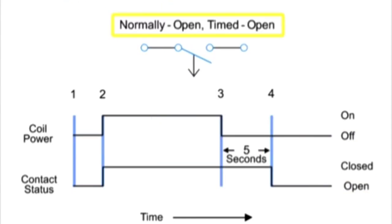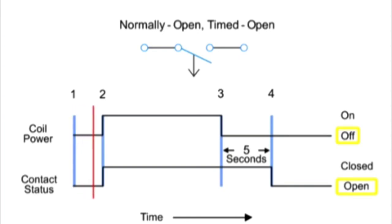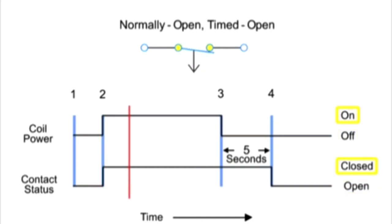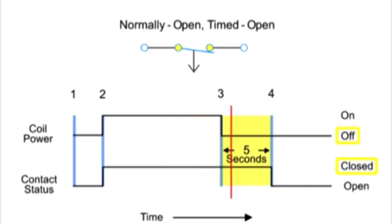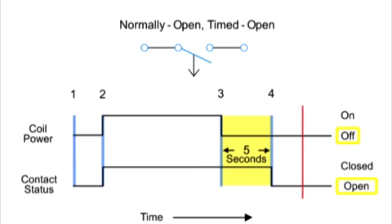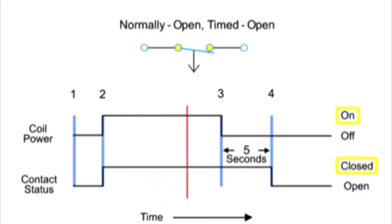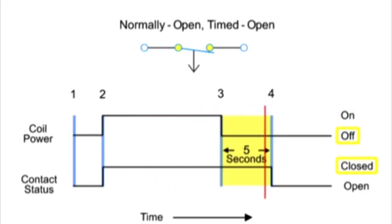Next, we have the normally open, timed open contact. Similar to the NOTC contact, this type of contact is normally open when the coil is unpowered or de-energized, and closed by the application of power to the relay coil. However, unlike the NOTC contact, the timing action occurs after the coil is de-energized for five seconds.